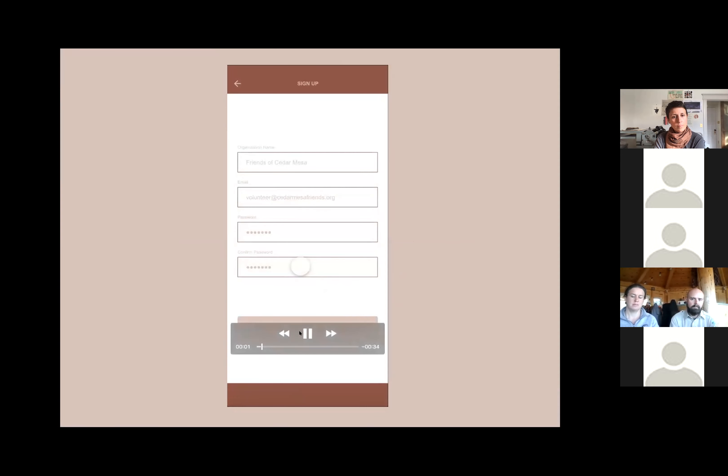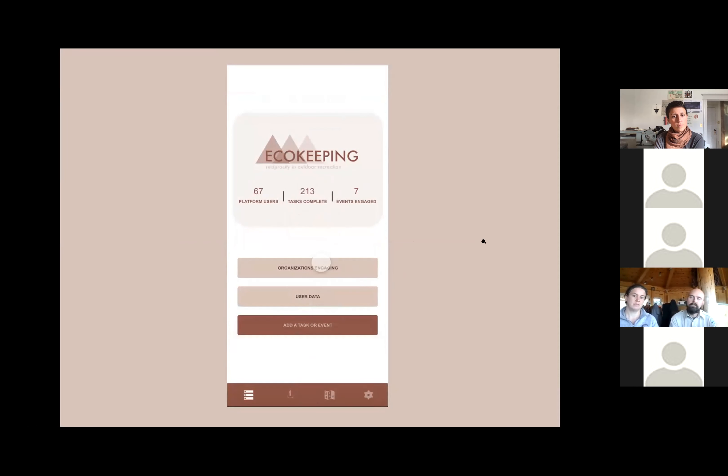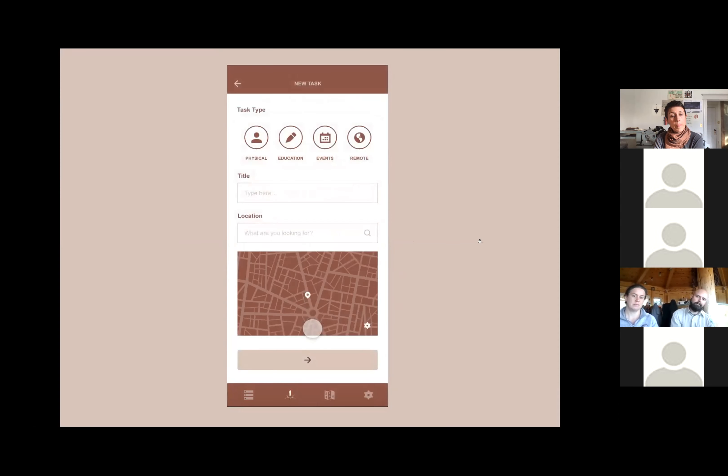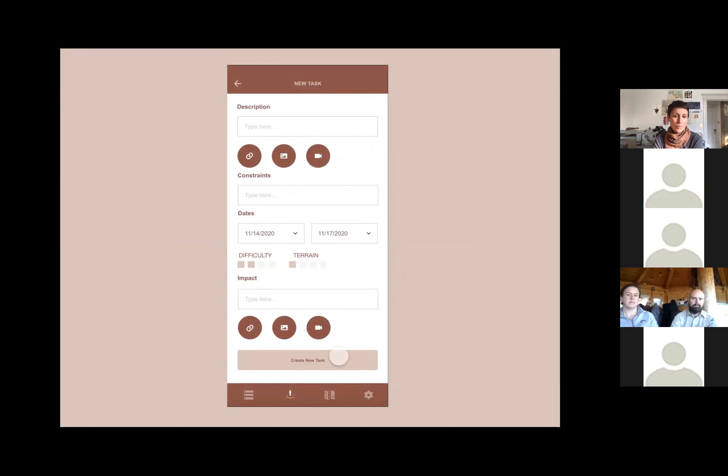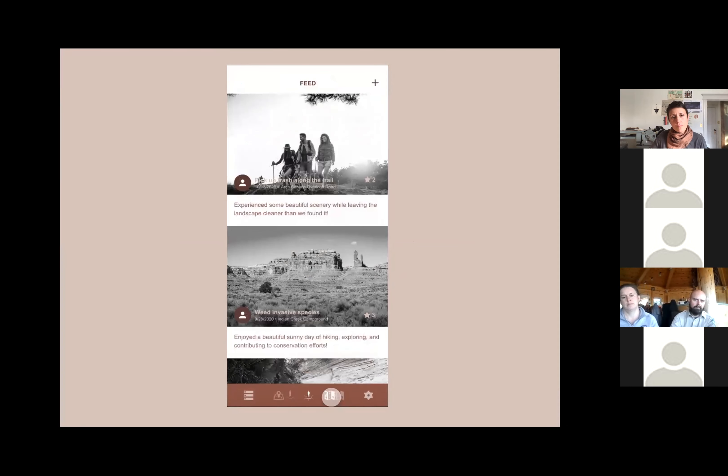There would also be a slightly different interface for organizers to manage the opportunities. Their dashboard would allow them to see the number of users, as well as the other engagement data. This is also where they would upload new tasks and events and attach any training or considerations that the user will need to know in order to complete the task properly. They can also share posts to share information, promote events, or motivate volunteers.